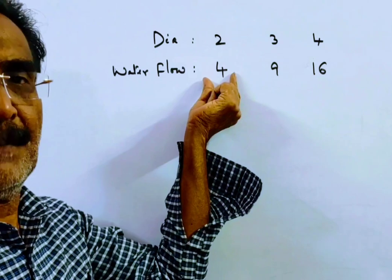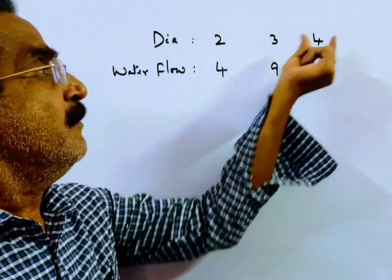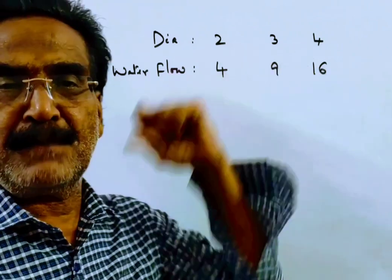That is say 4 units from this pipe, 3 squared 9 units from this pipe, 4 squared 16 units from this pipe.